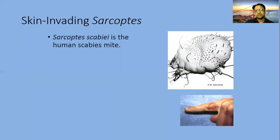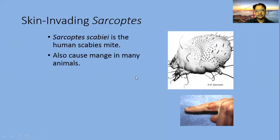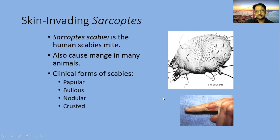Demodex follicle mites are common in India and Pakistan. Skin-invading mites also include the human scabies mite, which is very common in our area, in India and Pakistan. Scabies causes skin infections and these infections are more widespread among relatively older populations. They also affect many animals — this is also a disease affecting animal skin.